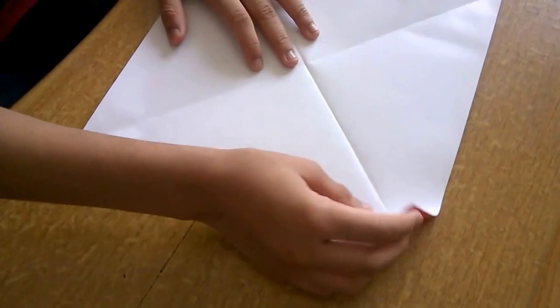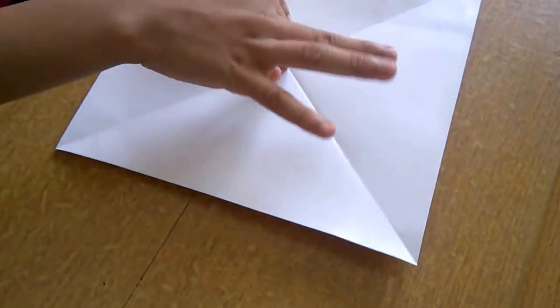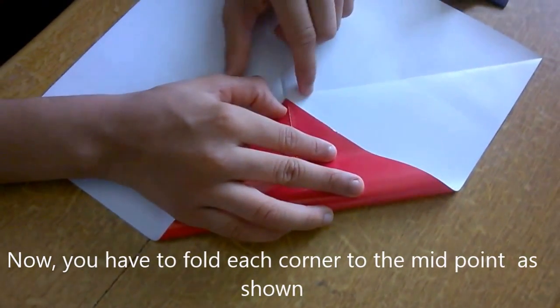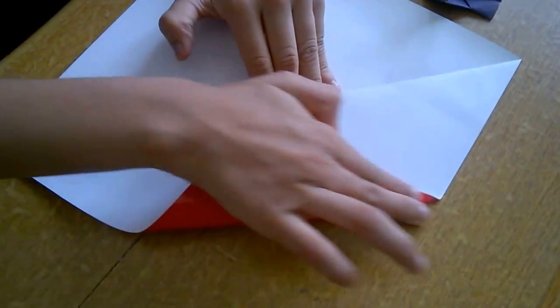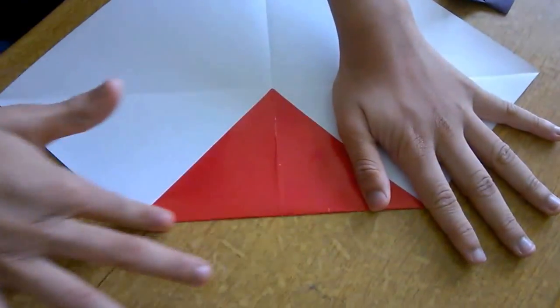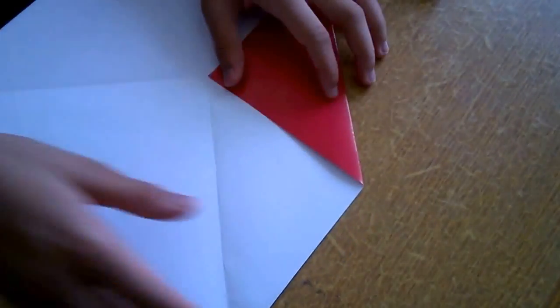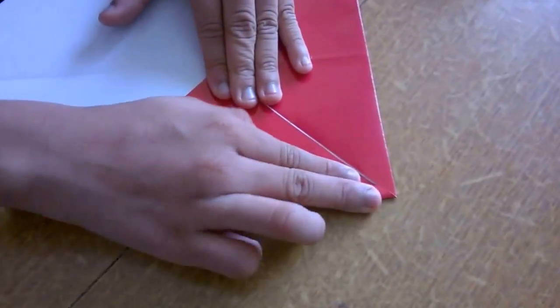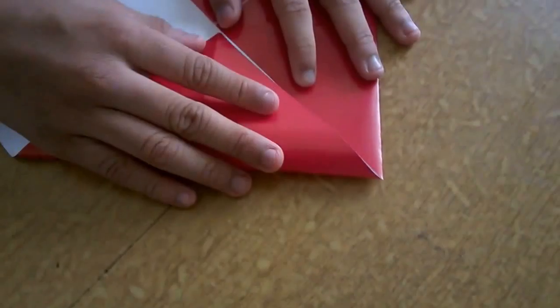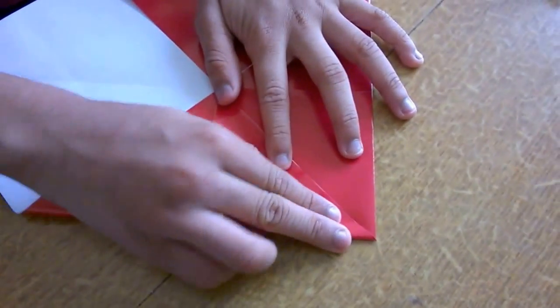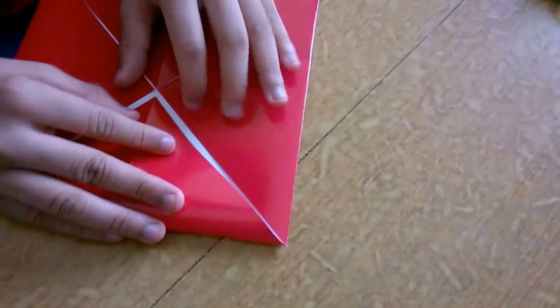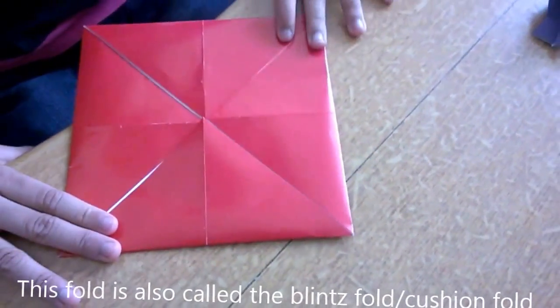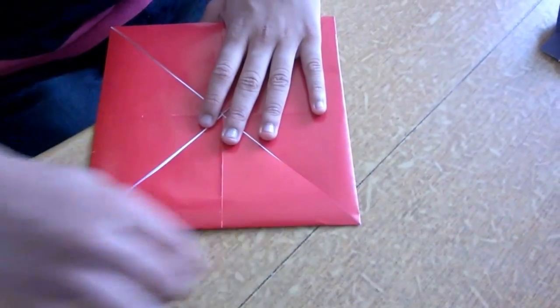Then take each corner and fold it into the mid dot. Crease well. Do it to all the other three flaps. Now we have this. This is called a blintz fold.